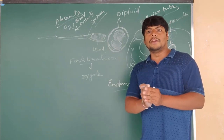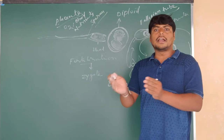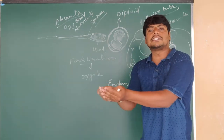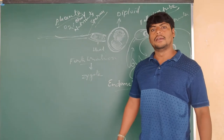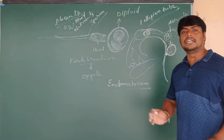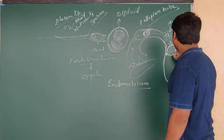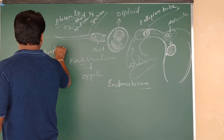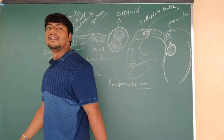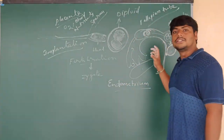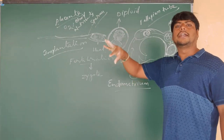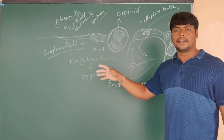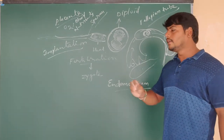The placenta supplies nutrients and oxygen to the growing fetus, and at the same time collects nitrogenous waste and carbon dioxide and removes them from the growing fetus. The process by which the zygote or embryo attaches and connects to the uterus by means of the placenta is called implantation. Implantation allows the baby to grow inside the uterus, which is also called the womb.